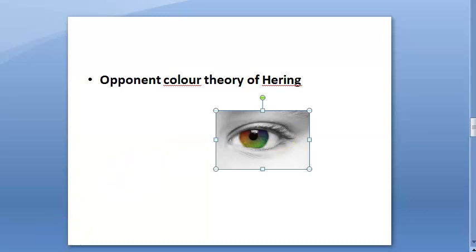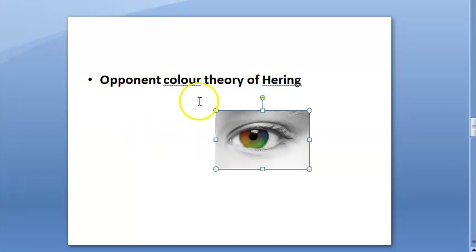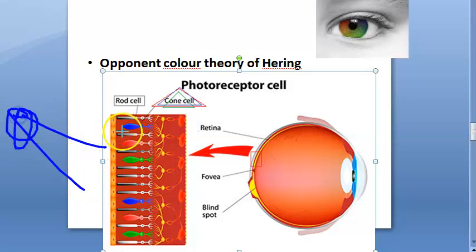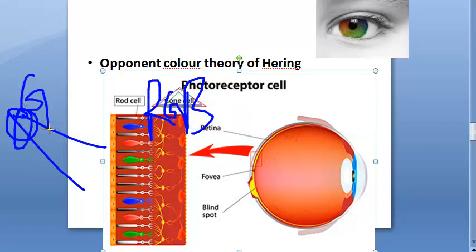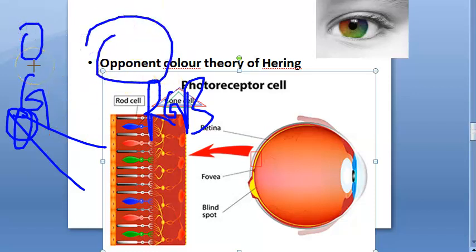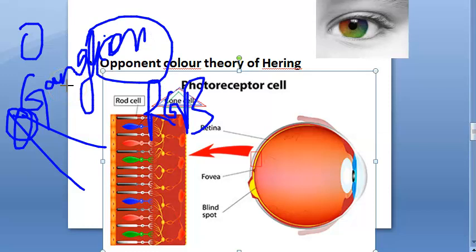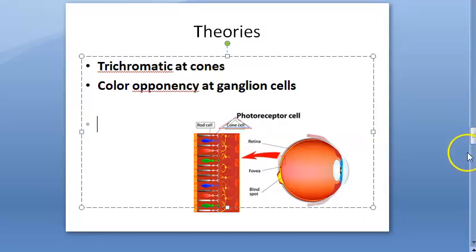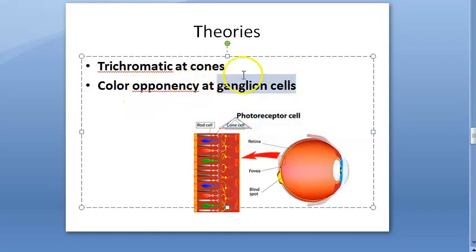Both theories are put together to explain color vision. Hering said colors are mutually exclusive - no reddish-green exists. Color vision at the level of photoreceptors is trichromatic. Further on, in the ganglion cells, color mixing and opponency happens. It can be red-blue or red-green opponency, but that mixing happens in the ganglion cells. Red-green and blue-yellow are opponent color pairs.